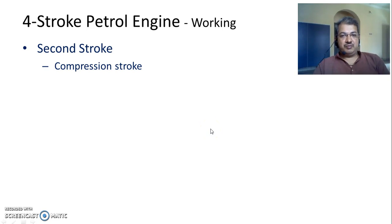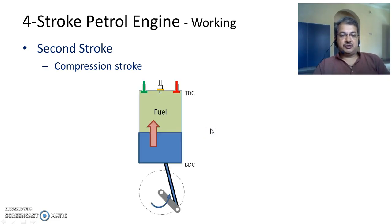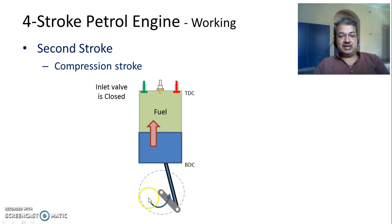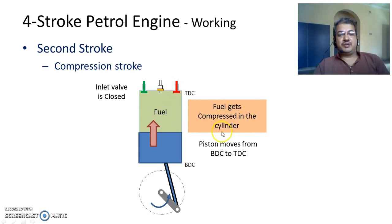The second stroke is called the compression stroke. During the compression stroke, the fuel that was taken into the cylinder is now compressed. The inlet valve closes and the piston is at Bottom Dead Centre. As the crank rotates, the piston moves from Bottom Dead Centre to Top Dead Centre. Because both valves are closed, the fuel inside the cylinder gets compressed. As a result of compression, the air-petrol mixture inside the cylinder reaches a very high value of pressure, and at the same time also reaches a very high temperature — which would reach the ignition temperature of petrol.